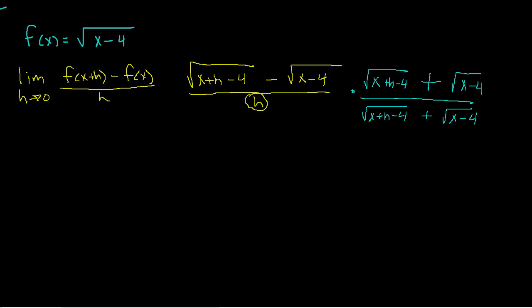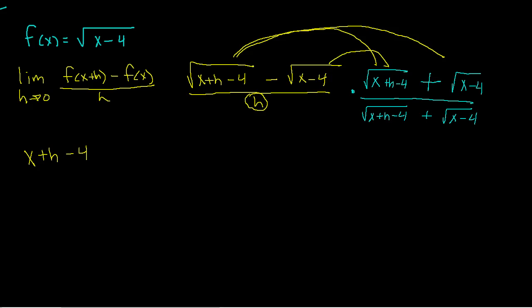What happens when I do this? On top, when I FOIL: multiplying the first terms together, the square roots cancel and I get x plus h minus 4. For the outside and inside terms, the square root of x plus h minus 4 times the square root of x minus 4 — these don't cancel. But when I multiply the insides, I get the exact same thing but negative, so they cancel. That's the whole reason to multiply by the conjugate — it guarantees those outside and inside terms cancel.